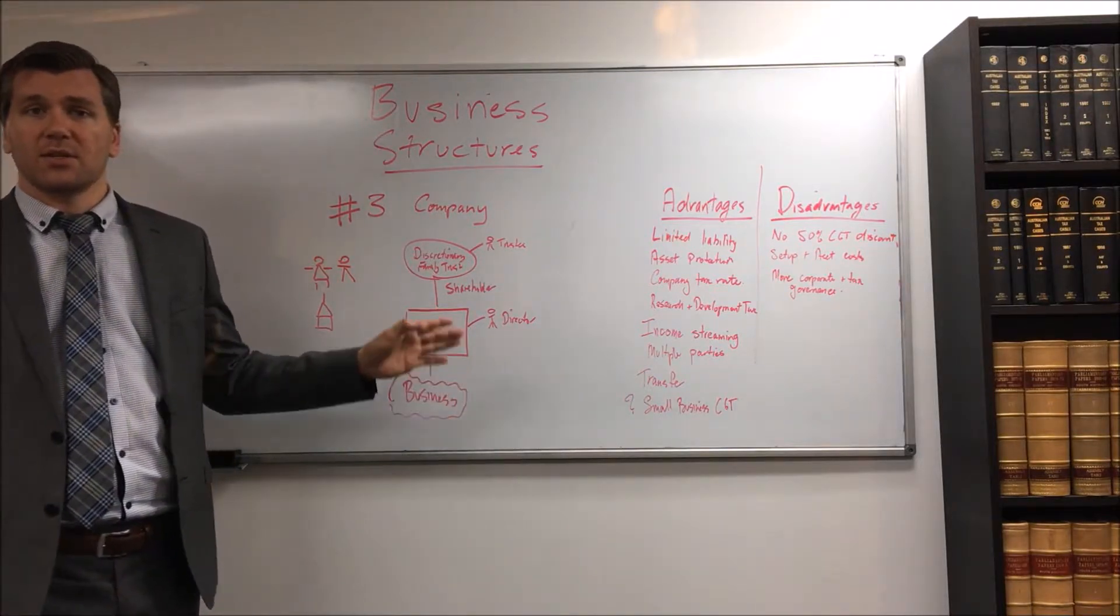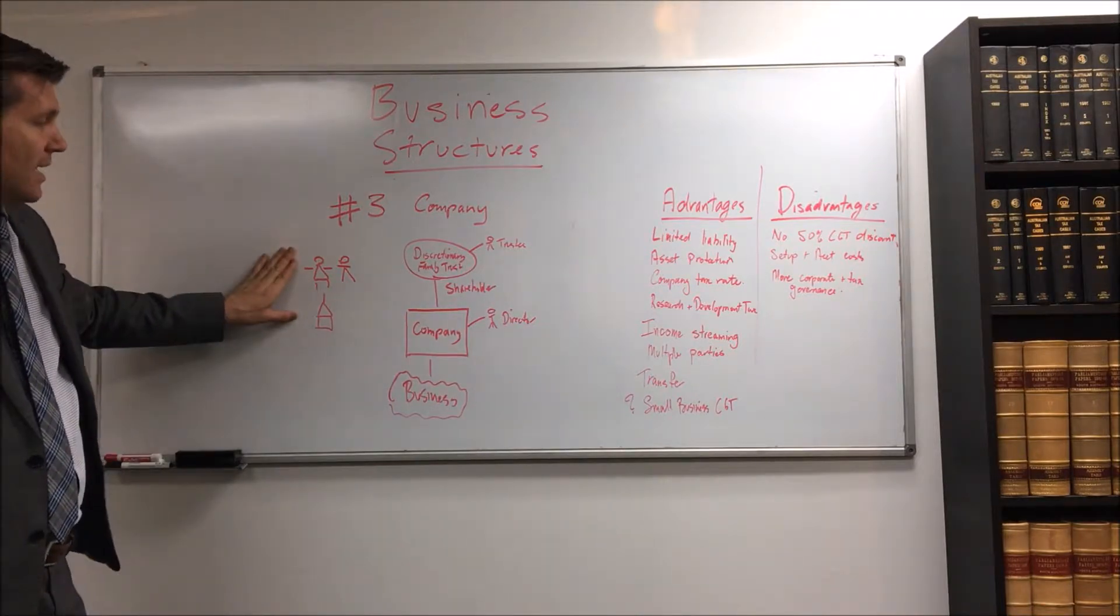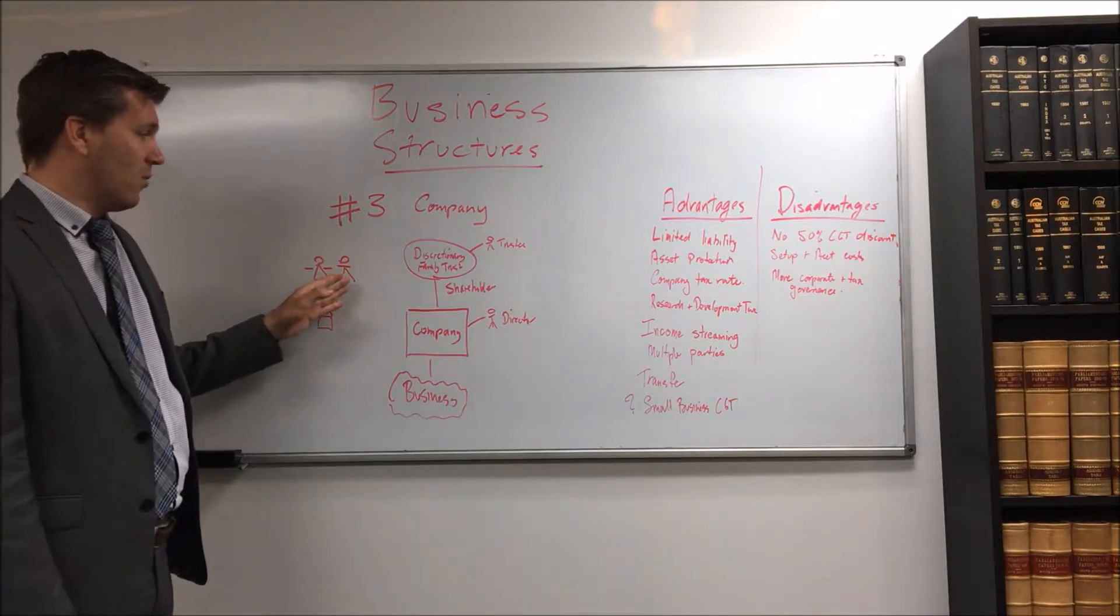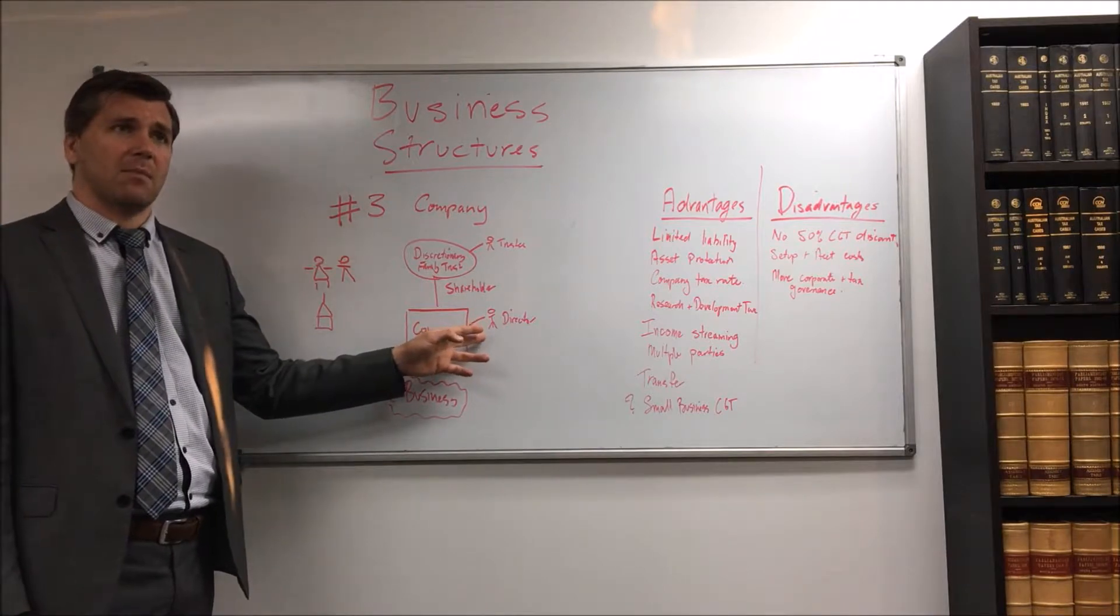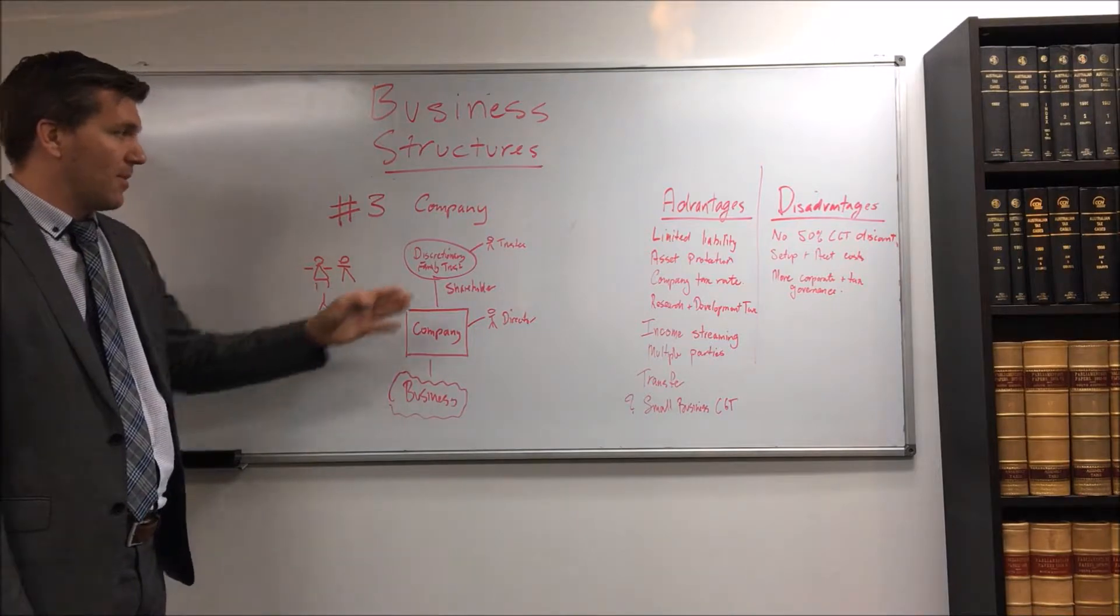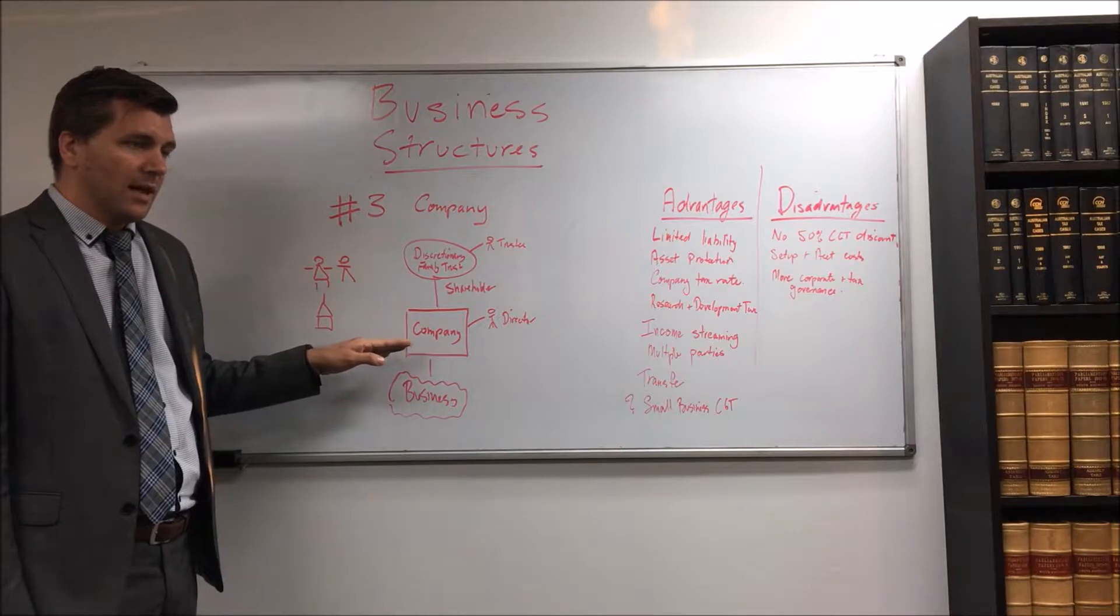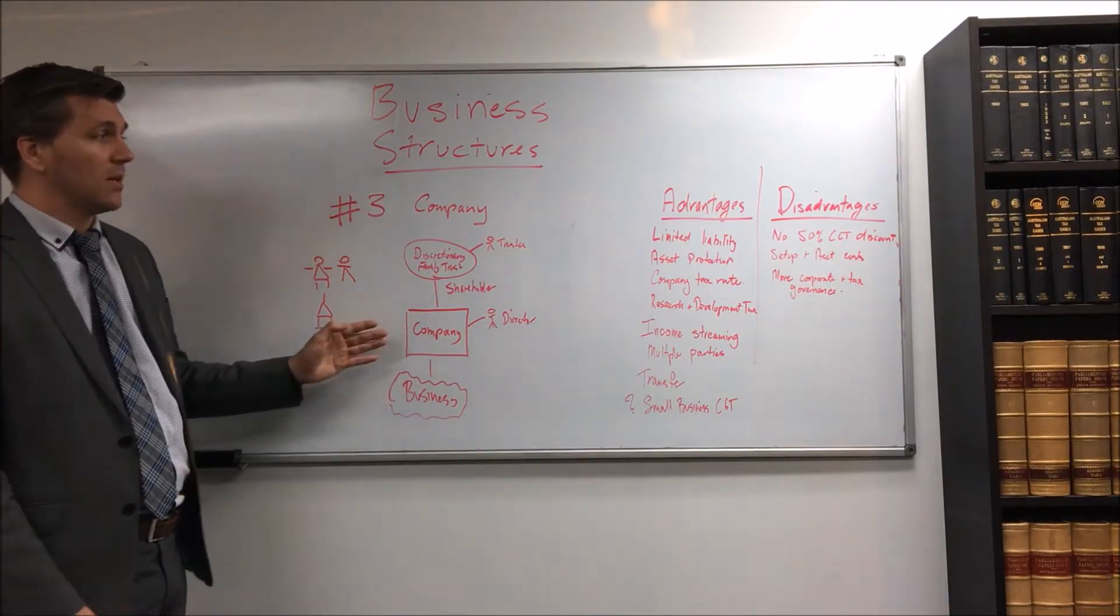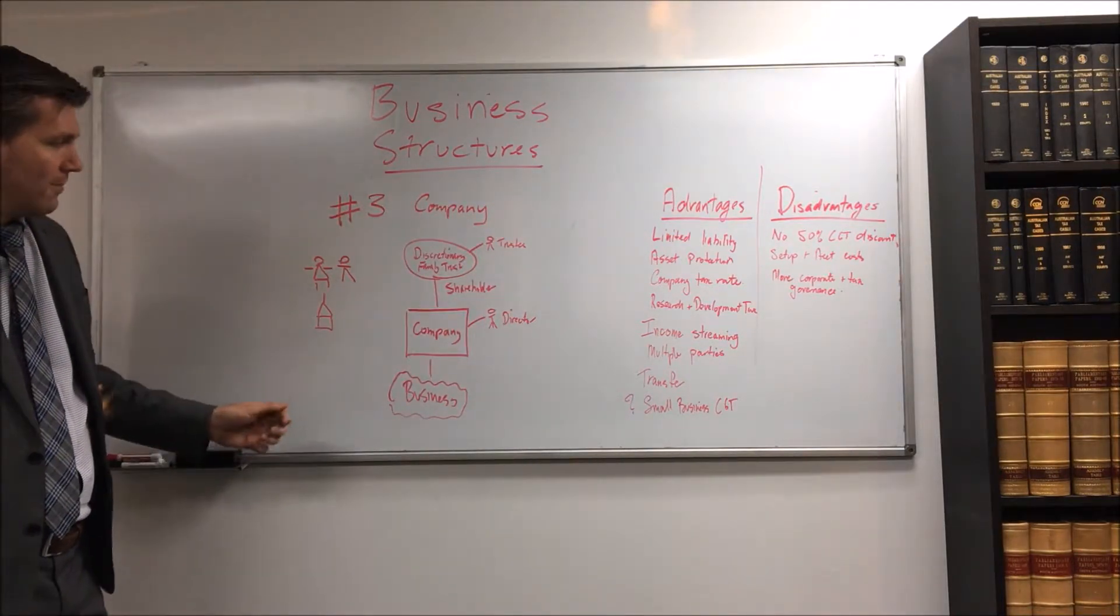So you can get around the director penalty notices, it is something just to be careful. So ideally you're going to have your personal assets in say your partner's name and then you'll have one person who's the at-risk party who takes the slightly more risky position of being the director and perhaps the trustee of the trust.